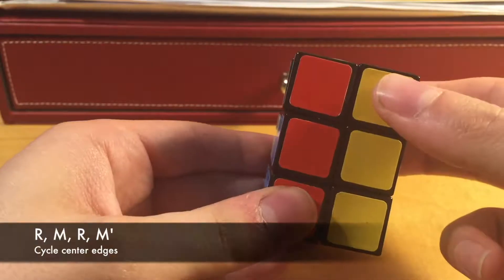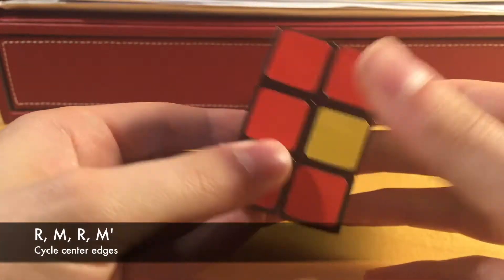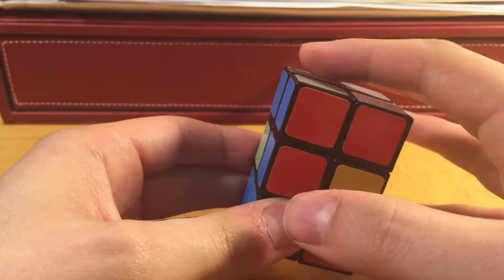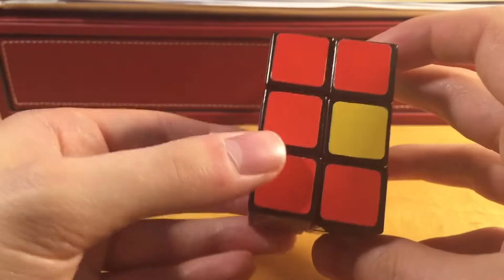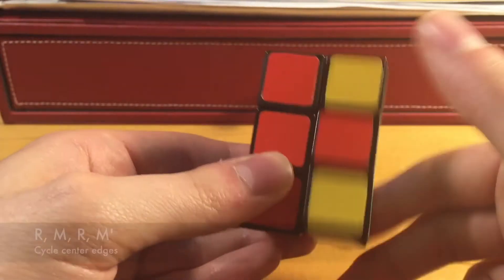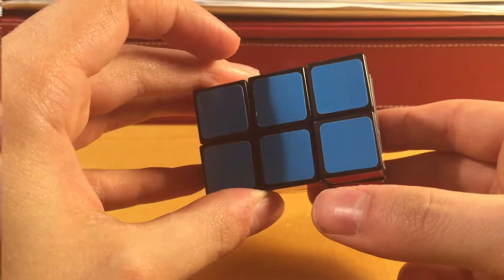So, you're going to want to do R, M, R, M prime. Now, you can see that that cycled it once in the counterclockwise direction. You're going to want to do that a second time in case it didn't already solve the puzzle. So, you're going to want to do R, M, R, M prime. And that solves the puzzle.